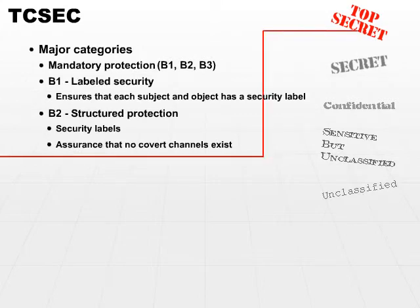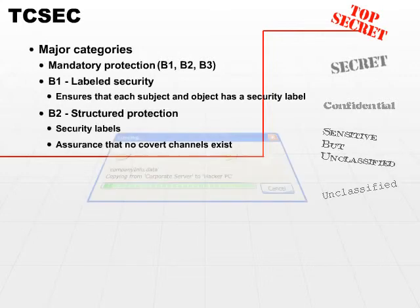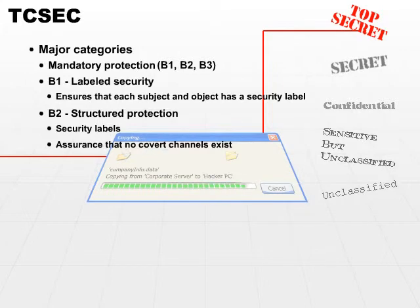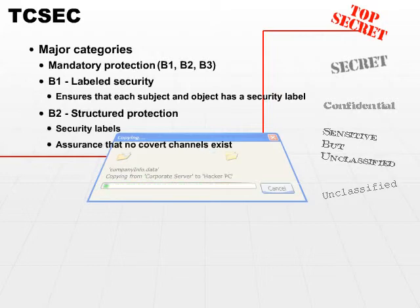A covert channel is a way of communicating through a non-authorized channel by copying data of one security level to an unauthorized security level using interesting strategies, either timing channels or using communication channels. Typically, there are software faults or backdoors or some other mechanisms used outside the standard communication protocol. Structured protection systems have to ensure that no covert channels — no opportunities — exist to communicate secure data outside the secure environment.